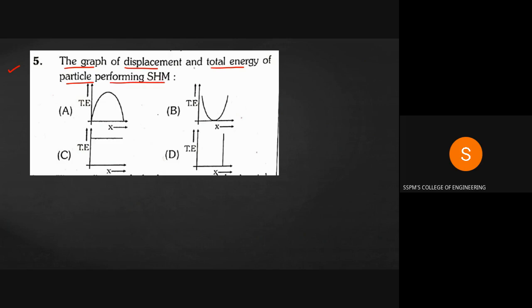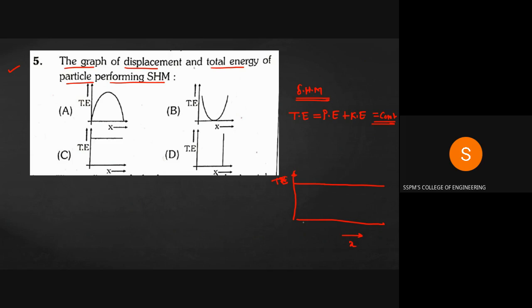Question 14: Graph of displacement and total energy of a particle in SHM. In SHM, total energy (KE + PE) always remains constant — there is no loss of energy during oscillation. So plotting total energy versus displacement gives a straight horizontal line parallel to the x-axis. Correct answer is option C.